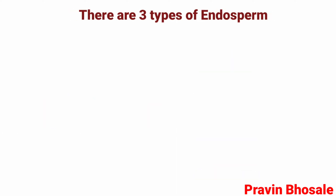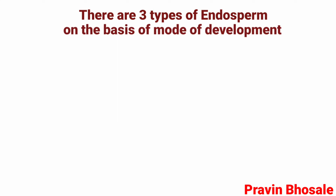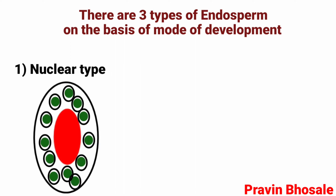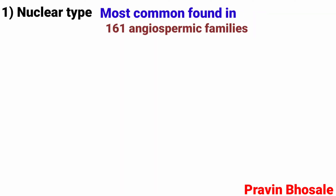There are three types of endosperm on the basis of mode of development: nuclear type, cellular type, and helobial type. The nuclear type is the most common, found in 161 angiosperm families.